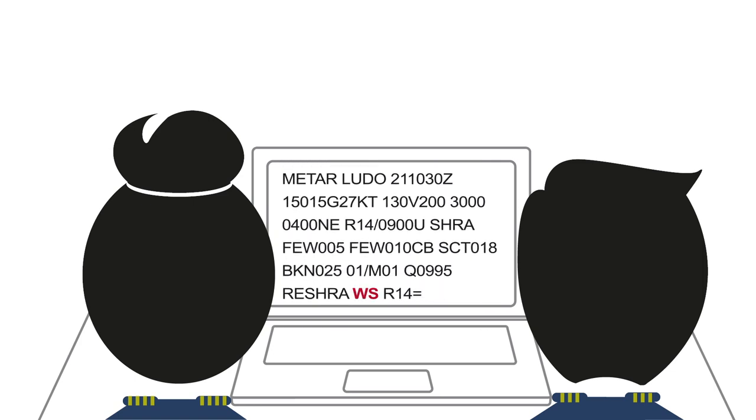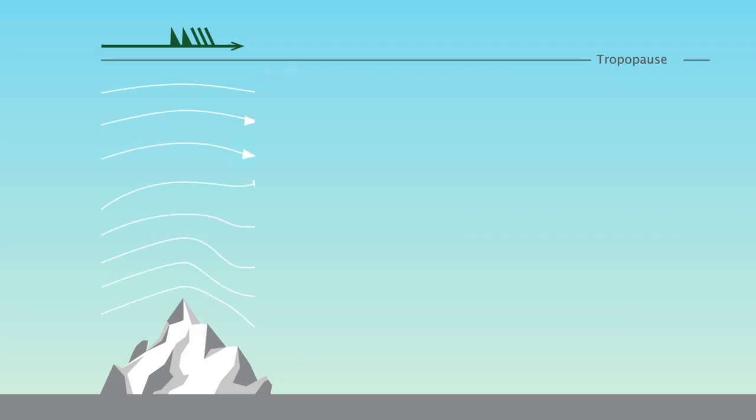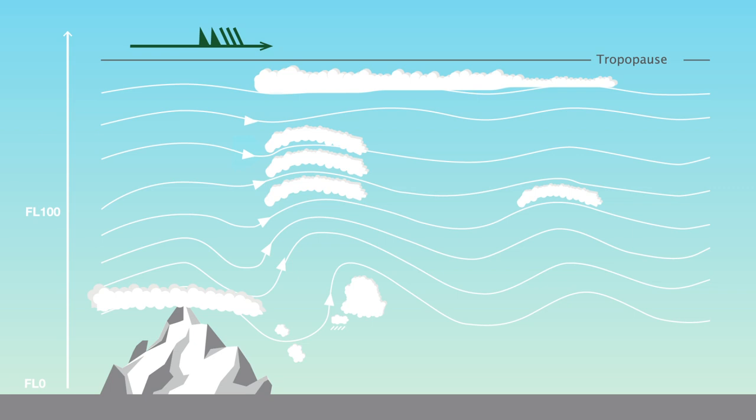Occasionally, in the METAR, wind shear may be indicated. When the airflow interacts with topography, turbulence can occur at the tropopause or close to ground with or without lenticular clouds.